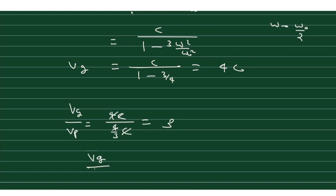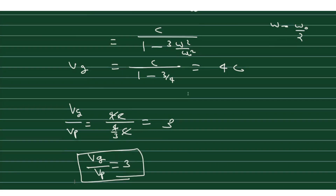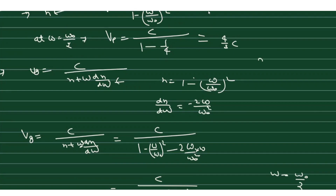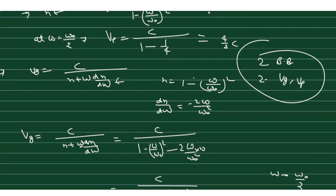I hope you understand these questions. They are very helpful — two questions from black body radiation, two from group velocity and phase velocity, and one from spectral energy density. Revise the concepts from the previous lectures, and I will provide the question list in the description. If you have any doubt you can ask me at any time in the comments.